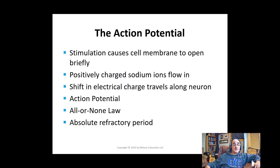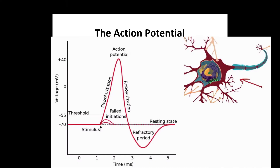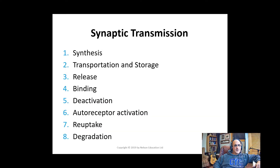When a neuron is stimulated, channels in the cell membrane open briefly, allowing positive ions outside the cell to flow inside. This shift in electrical charge travels along the axon and is referred to as the action potential. Either an action potential occurs or it doesn't — once initiated it goes full force. The absolute refractory period is the minimum length of time after an action potential during which another action potential cannot begin.